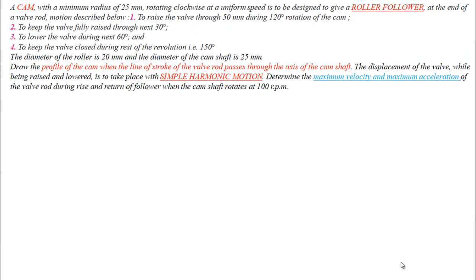In this question we are going to understand the cam profile when the follower moves with simple harmonic motion. We have a cam with a base circle radius of 25 mm rotating clockwise at a uniform speed, designed for a roller follower at the end of a valve rod.